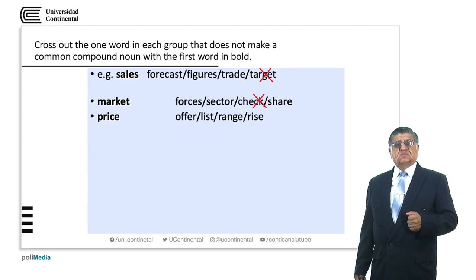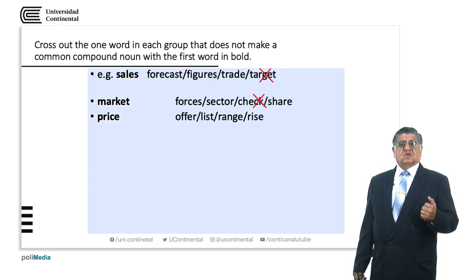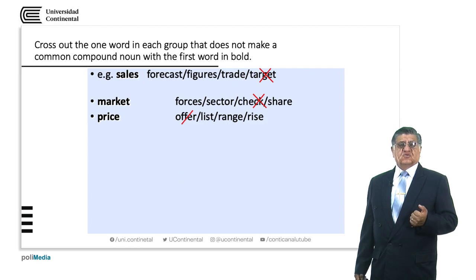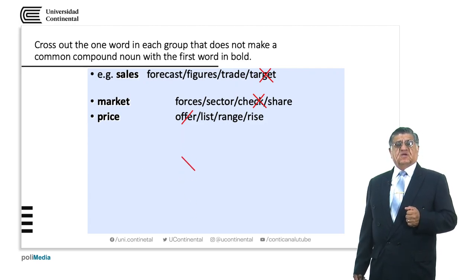Price: 'price list', 'price range', 'price rise' are all valid. 'Price offer' does not have a real meaning.